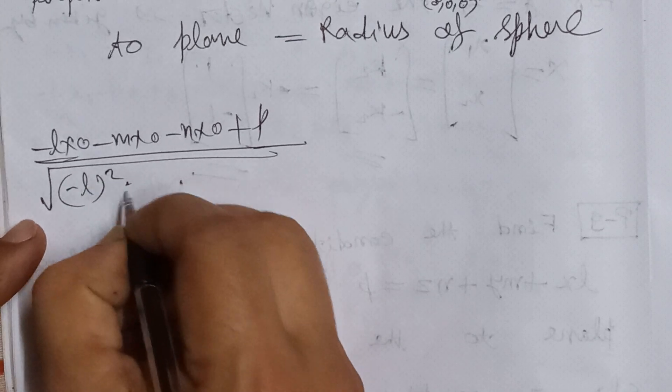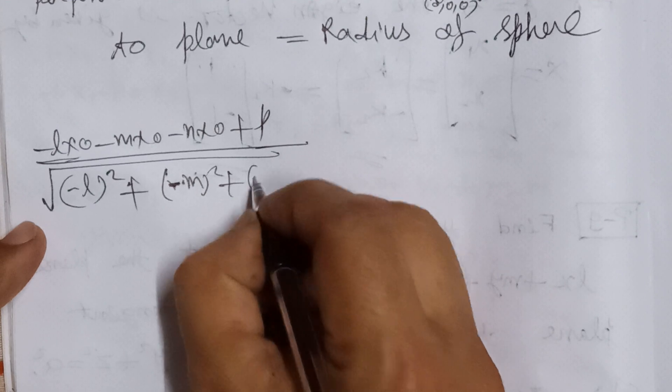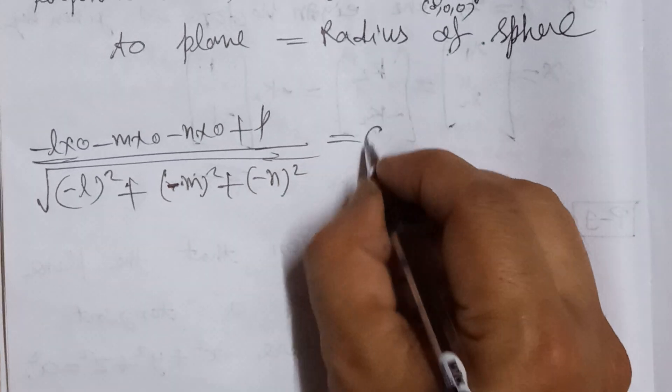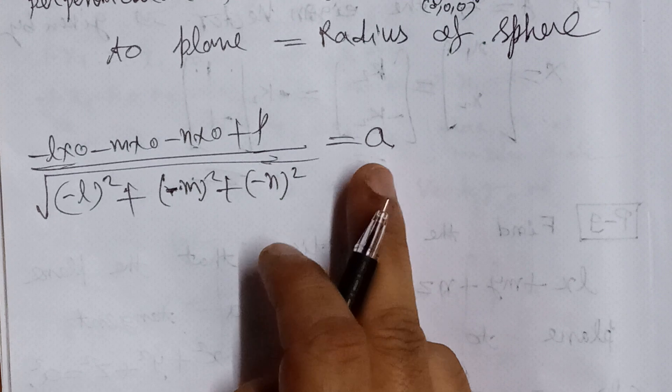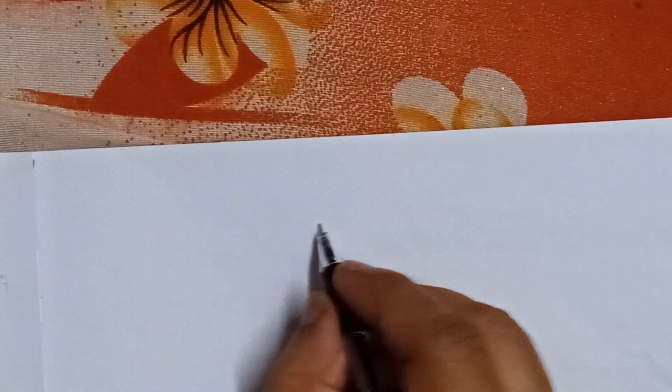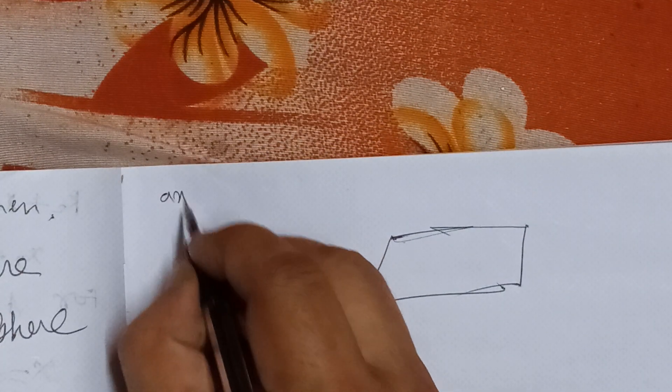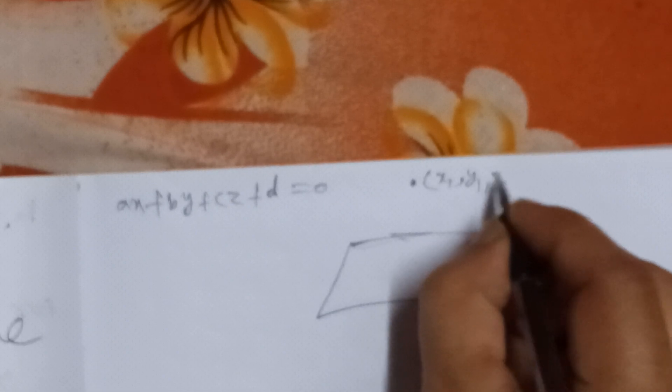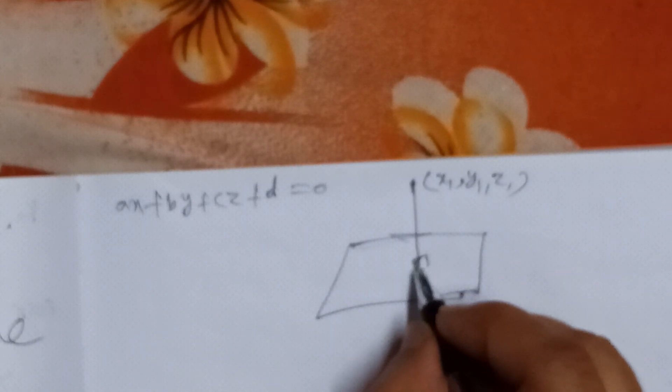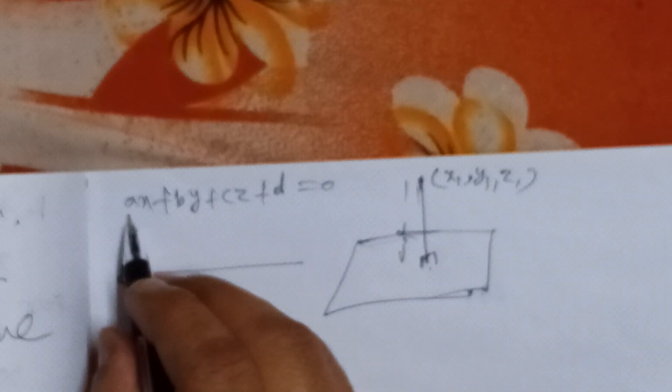I apply this formula: if we are given an equation of plane ax + by + cz + d = 0, and we have to find the perpendicular distance from a point to this plane, then this distance is given by |ax₁ + by₁ + cz₁ + d| / √(a² + b² + c²).